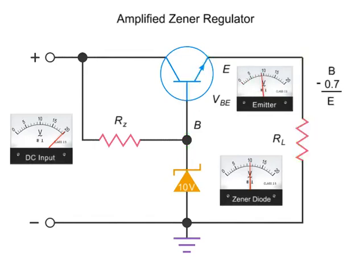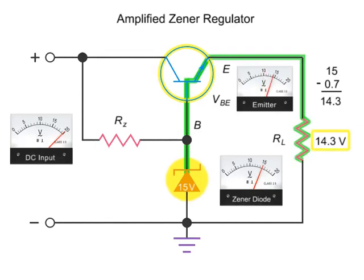With a Zener diode value of 15 volts, you'll have a 14.3V voltage at the emitter and the RL resistor.